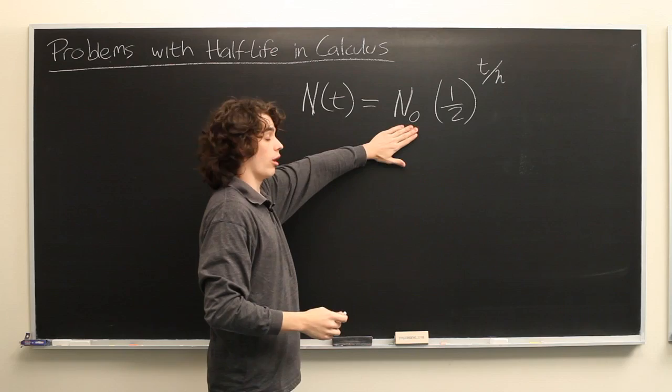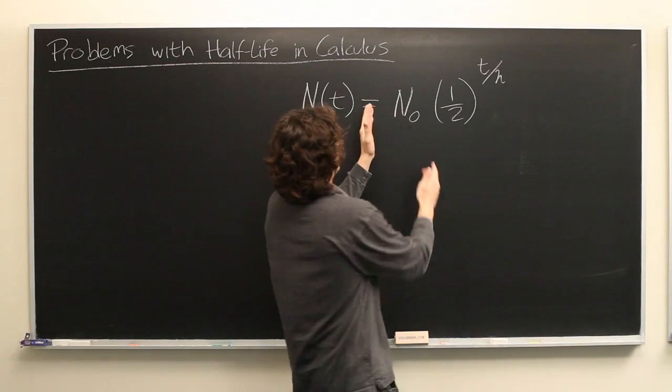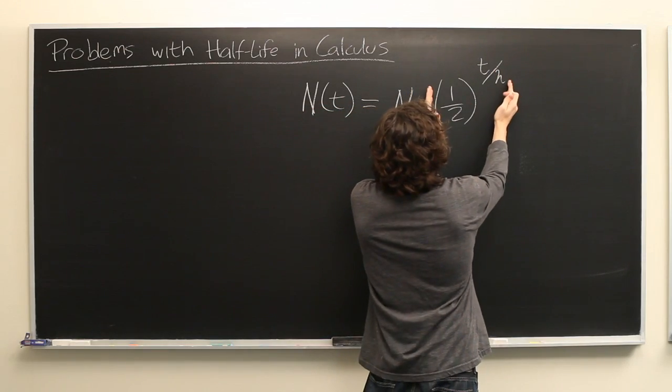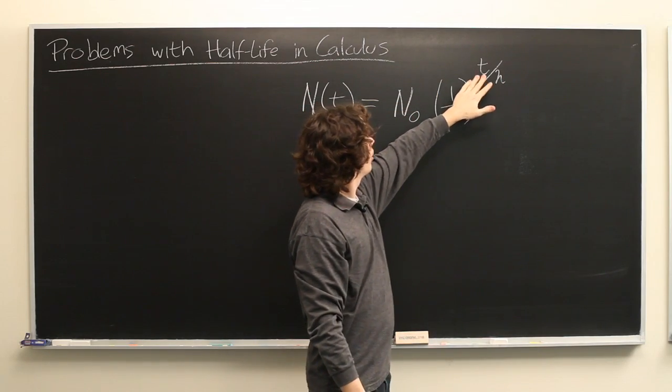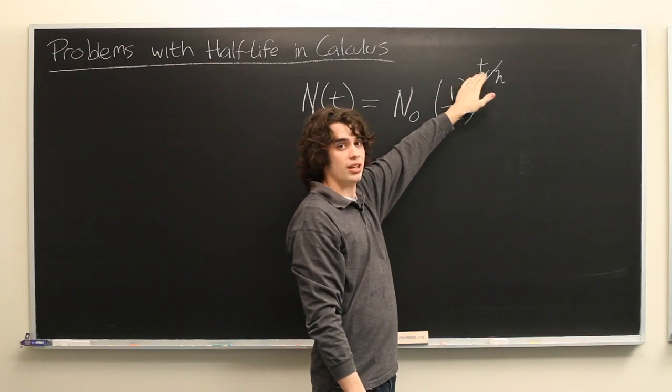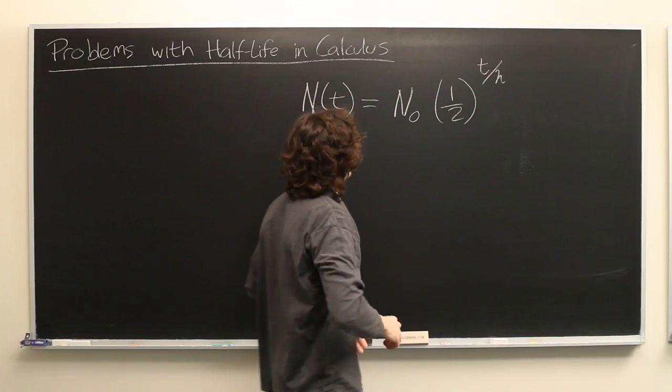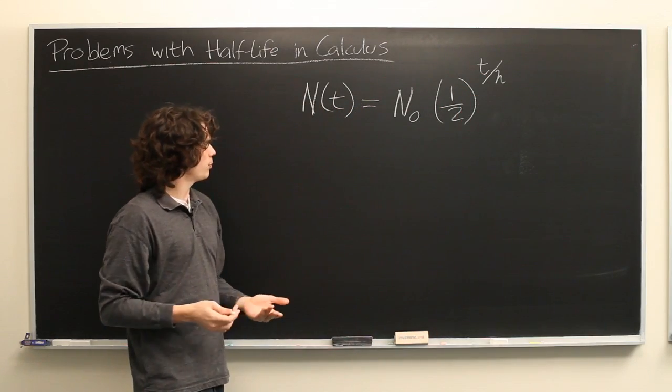So again, we have our initial quantity, which stays the same, and then this part represents the exponential decay, taking one-half, raising it to the power of t divided by the half-life. All right, let's put some numbers in here.